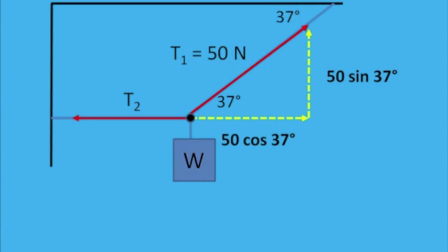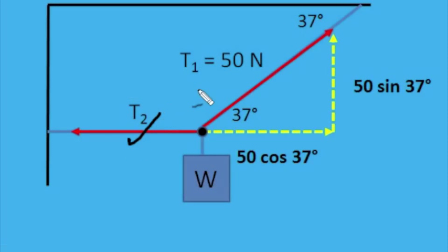Now let's get a close look and set up the equations. If I wanted to, I could say T2, the force to the left, equals 50 cos 37, the force to the right. But I don't need to find T2. Now acting down is this weight, and there's its vector.